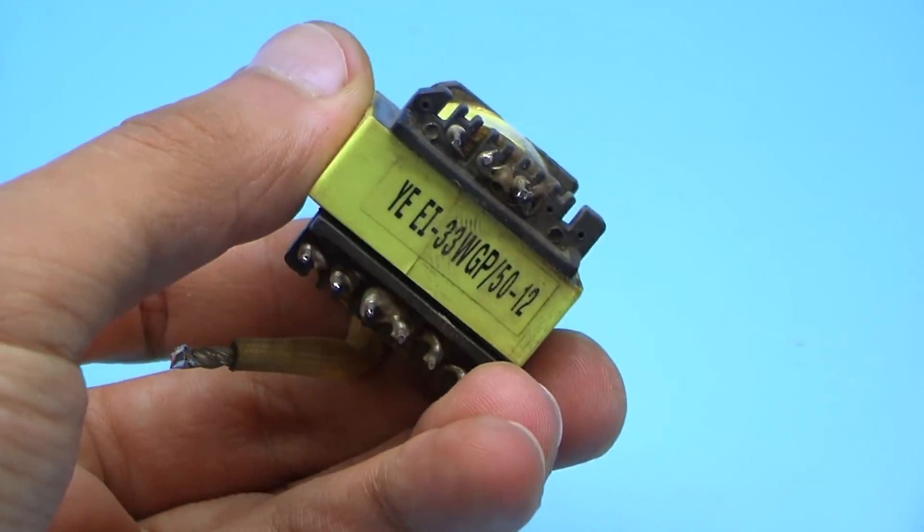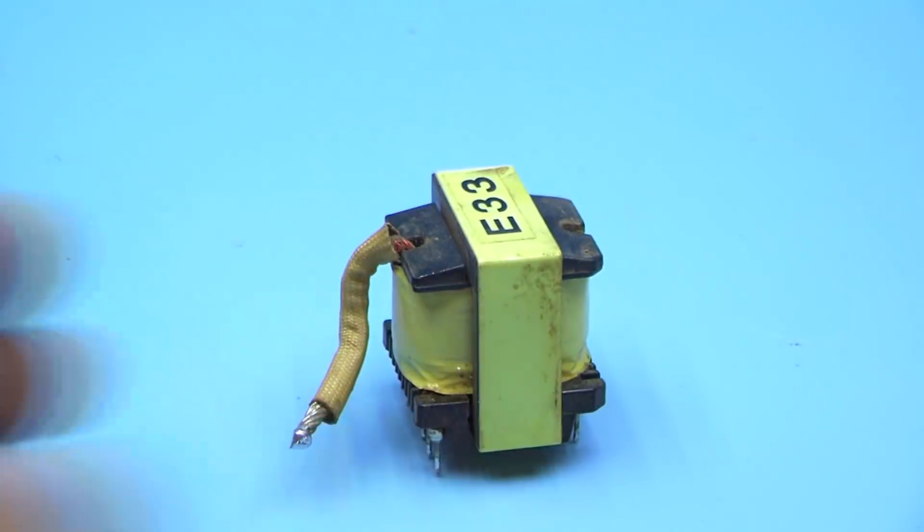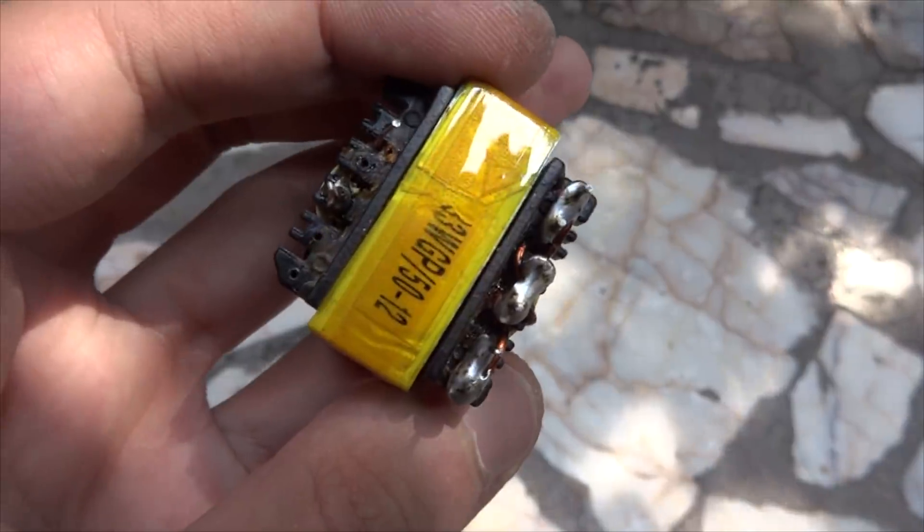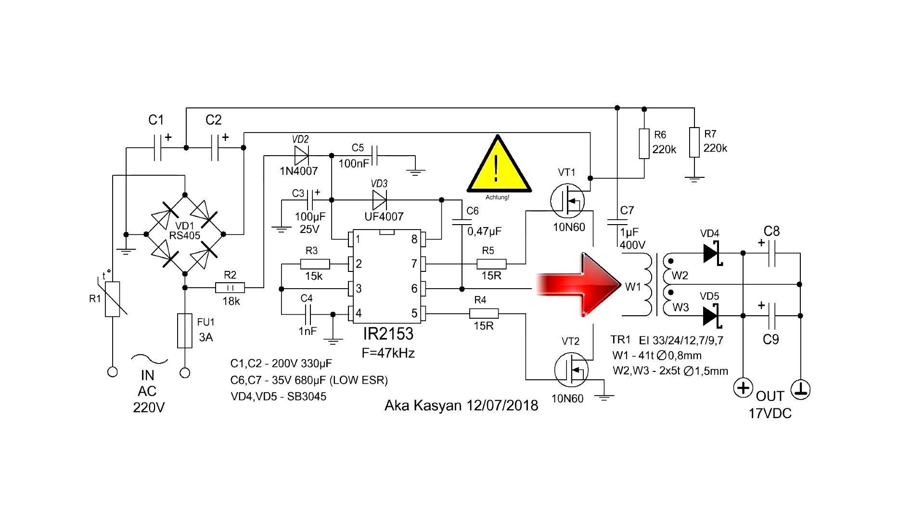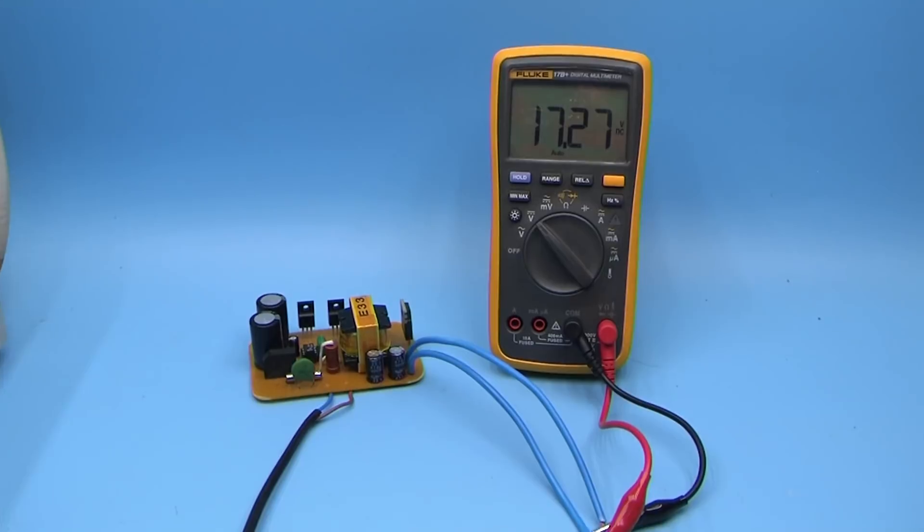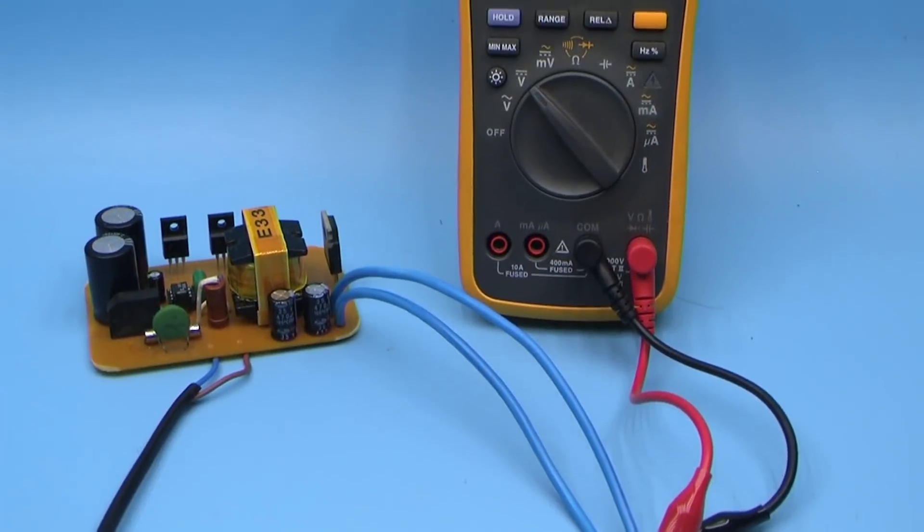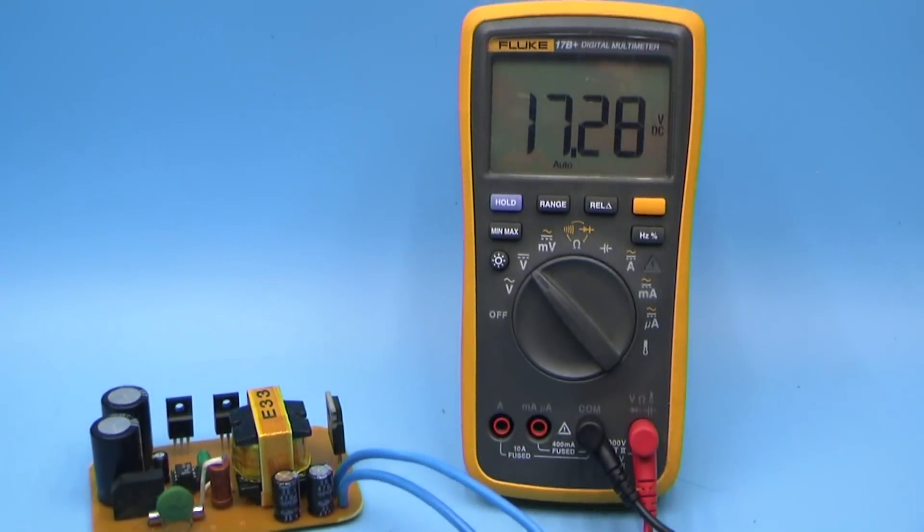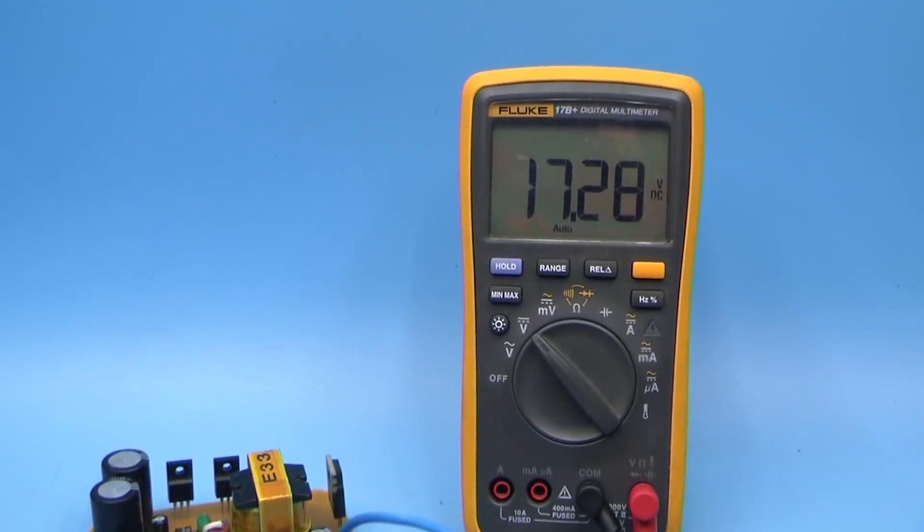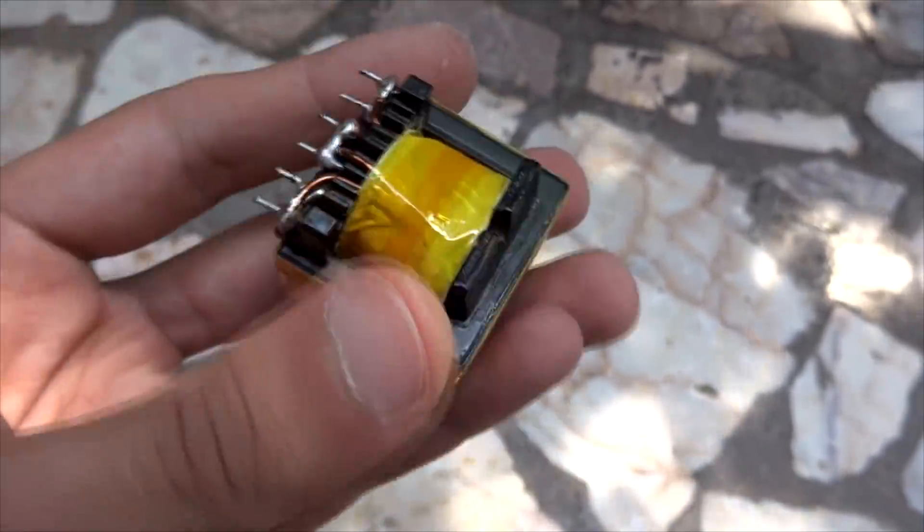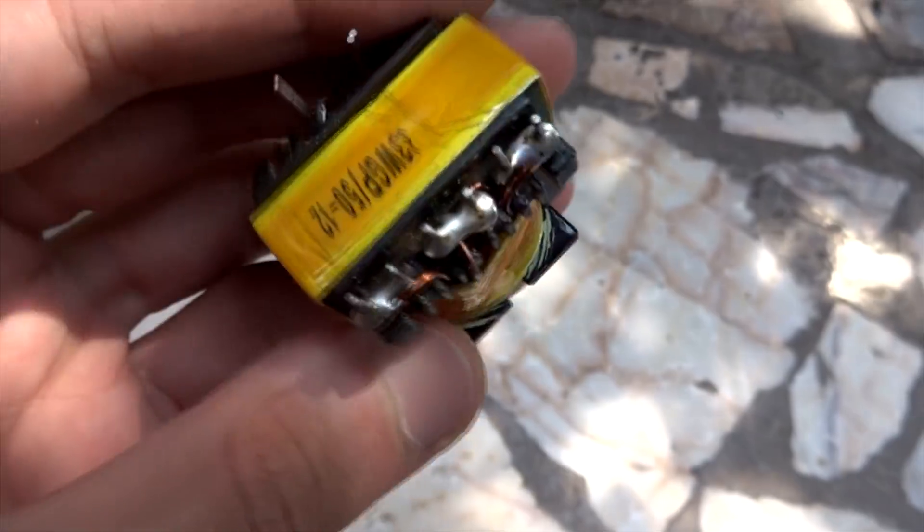In the case of using transformers of the same size from computer and taking into account the operating frequency of the IR2153 chip, the primary winding contains about 40 turns with a 0.8 mm wire. The secondary winding is wound with a calculation of 1 turn of 3 to 3.5 volts. In my case I wound 2 halves of 5 turns each, and the output voltage was about 17 volts, but under load it would be slightly less. The diameter of the wire is 1.2 mm. This is enough to get a decent current output.